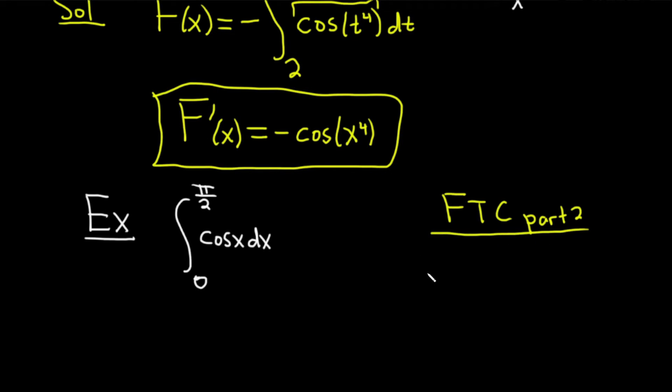And this basically says if you have the integral from a to b of f(x) with respect to x, it's equal to big F(b) minus big F(a), where big F is called an antiderivative for little f. That basically means if you take the derivative of big F, you're going to get little f. So big F is an antiderivative.